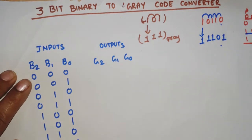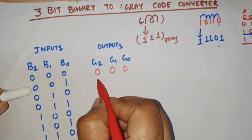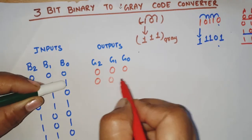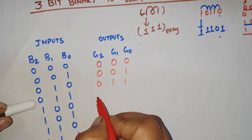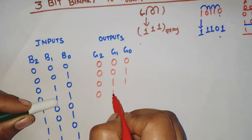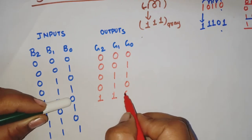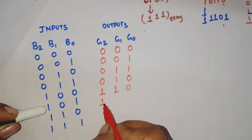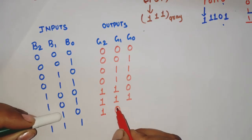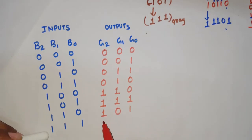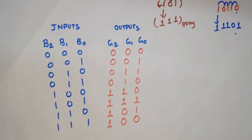For the gray code conversion: first bit is always the same. For 0-0-0: G2=0, 0 XOR 0=0, 0 XOR 0=0. For 0-0-1: G2=0, 0 XOR 0=0, 0 XOR 1=1. For 0-1-0: G2=0, 0 XOR 1=1, 1 XOR 0=1. For 0-1-1: G2=0, 0 XOR 1=1, 1 XOR 1=0. For 1-0-0: G2=1, 1 XOR 0=1, 0 XOR 0=0. For 1-0-1: G2=1, 1 XOR 0=1, 0 XOR 1=1. For 1-1-0: G2=1, 1 XOR 1=0, 1 XOR 0=1. For 1-1-1: G2=1, 1 XOR 1=0, 1 XOR 1=0.